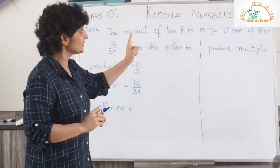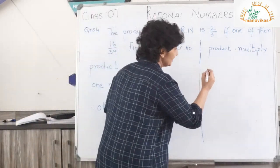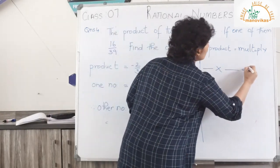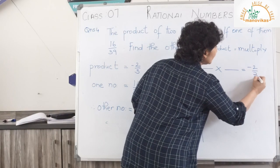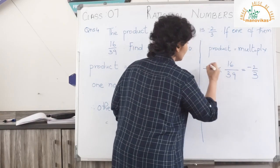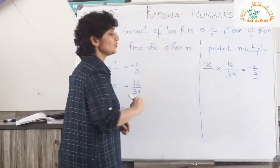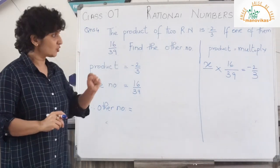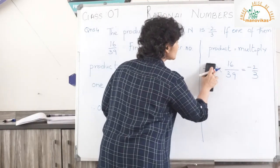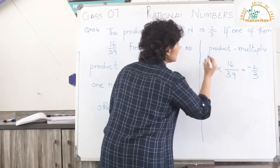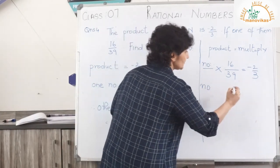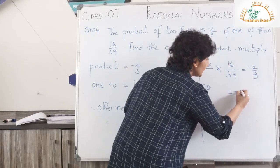Coming back to the question: the product of two numbers, meaning something multiplied by something, is minus 2 upon 3. If one of them is 16 upon 39, I need to find the other number. I can use x, or let's just call it 'number'. Whenever I need to find my number, I put it equal to minus 2 upon 3.